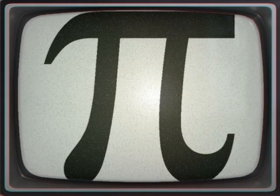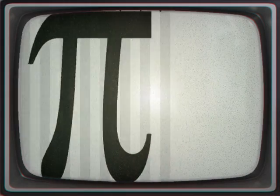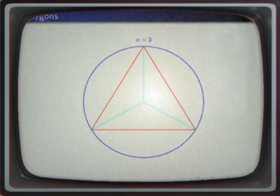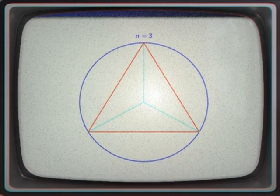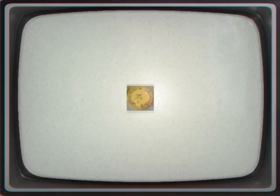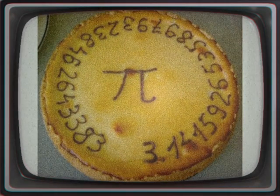For thousands of years mathematicians have attempted to extend their understanding of pi, sometimes by computing its value to a high degree of accuracy. Before the 15th century, mathematicians such as Archimedes and Liu Hui used geometrical techniques based on polygons to estimate the value of pi.